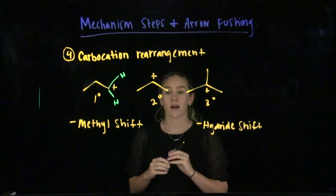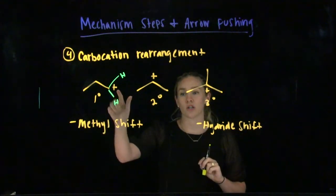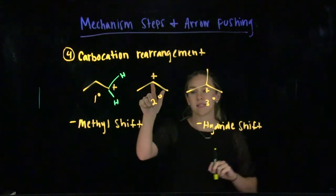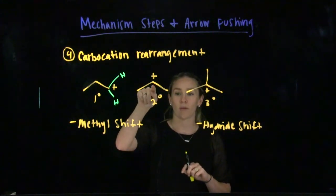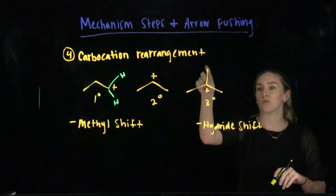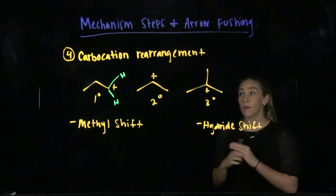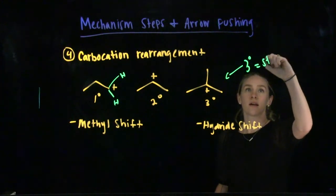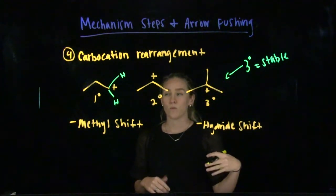A primary carbocation has a positive charge on a carbon with only one other carbon group attached. A secondary carbocation has two other carbon groups attached to the positive carbon. A tertiary carbocation has three other carbon groups attached. The big takeaway from carbocation stability is that a tertiary carbocation is the most stable, and this gives us the reason why we perform a carbocation rearrangement — both methyl shifts and hydride shifts exist to make a carbocation more stable.